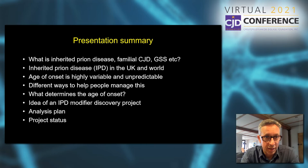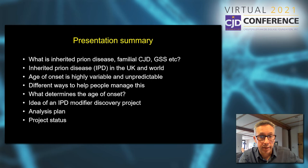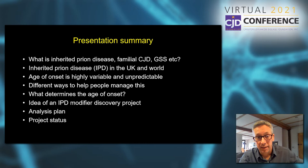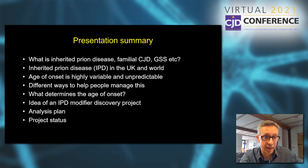To summarize this presentation, I'm going to talk about the inherited prion diseases and cover some of the other terms that are commonly used to describe groups of patients with this disorder, and the experience of inherited prion disease in a specialist clinic in the UK and compare that to what would be expected elsewhere in the world. I'm then going to focus on the age of onset of disease as a key variable and how unpredictable that is. It's important if we are to help people with this condition that we try and understand age of onset better and what might determine it. And through those questions was conceived this project — the inherited prion disease modifier project — describing what we're trying to do, how we're going to do the analysis, and an update on where we are right now.